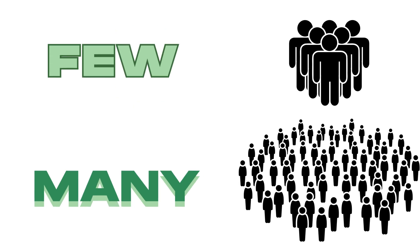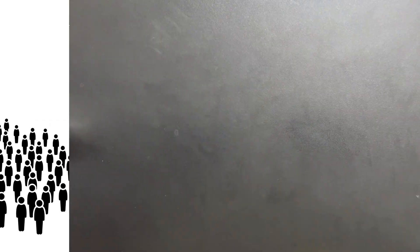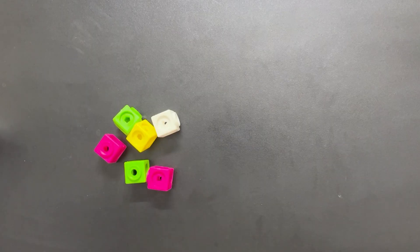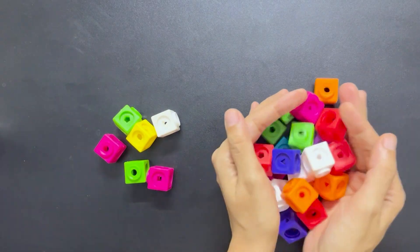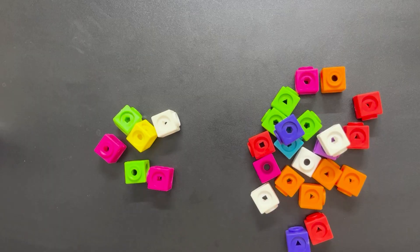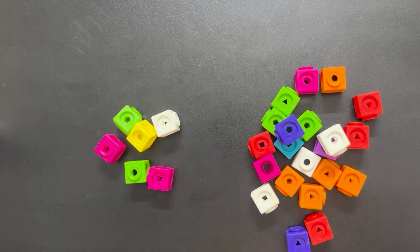Few, many. The last opposite we will learn are few and many. At the left side, I've kept a small quantity of number blocks, and the right side shows a bigger quantity showing many blocks.